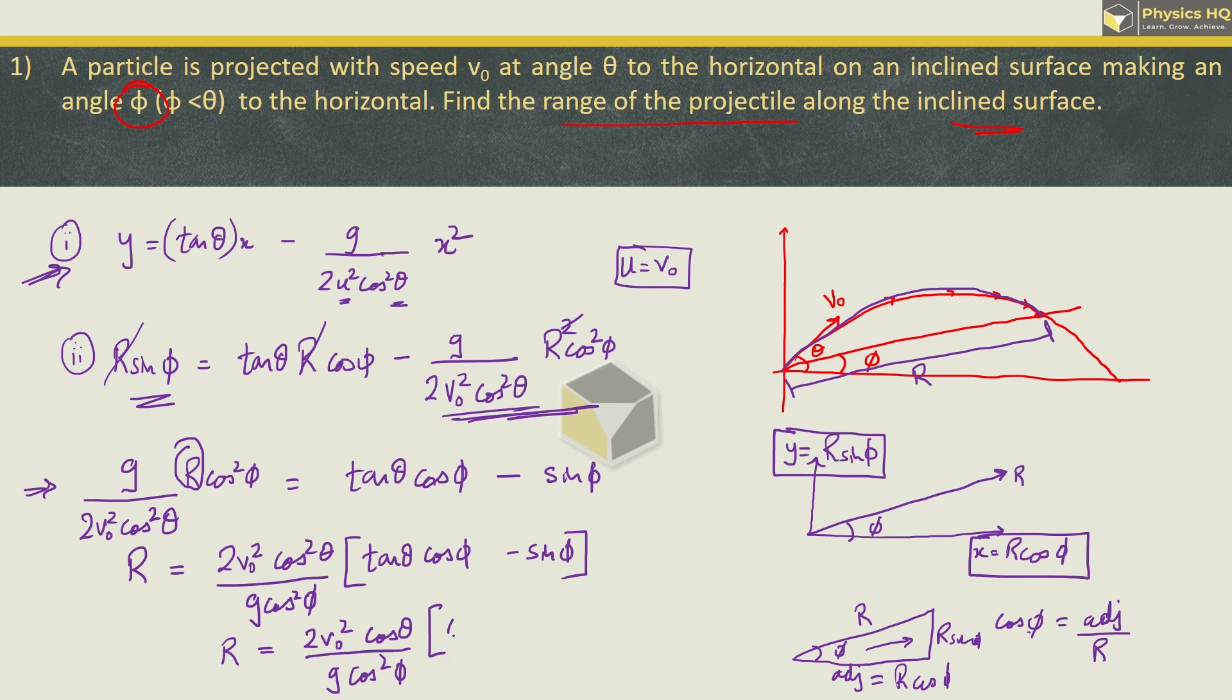In the bracket, cos theta multiplied. We can write sin theta cos theta into cos phi minus cos theta multiplied into both terms into sin phi. So this cos theta will cancel.